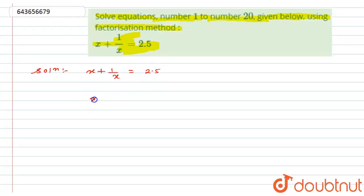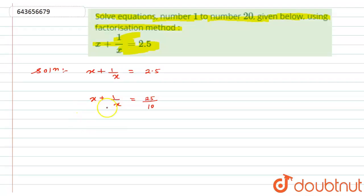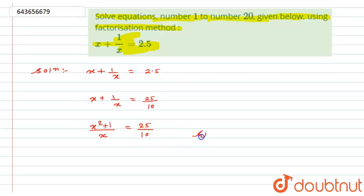This can be written as x plus 1 by x equals 2.5, and 2.5 can be written as 25 divided by 10, by multiplying and dividing by 10. Now combining the left-hand side over a common denominator, it becomes x squared plus 1 divided by x equals 25 divided by 10.